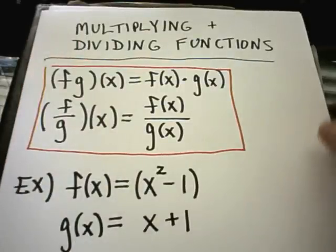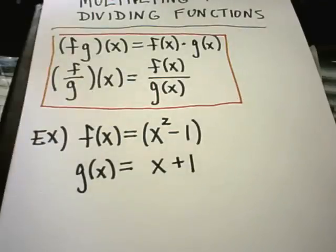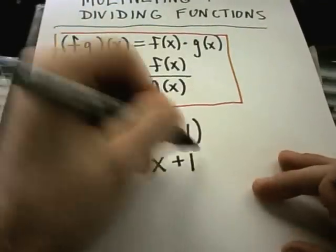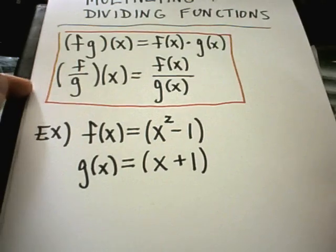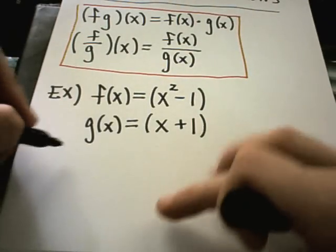So for example, suppose I have these two functions. x squared minus 1 is f of x and x plus 1 is g of x. So I'm putting them both in parentheses.